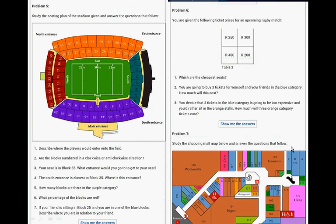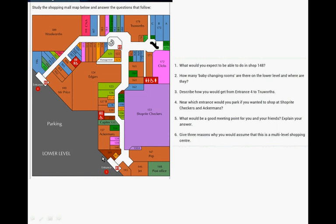And then Problem 7, the shopping mall. Study the shopping mall below and answer the questions. This is the shopping mall. What would you expect to be able to do in Shop Number 148? Where is 148? There. How many baby changing rooms are there in the lower level and where are they? Describe how you would get from Entrance 4 to True Worths. Where's Entrance 4? There.